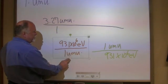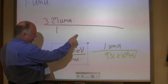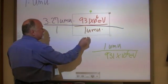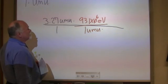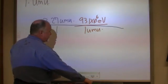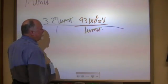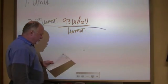Which one of these conversion factors do we use? Well, universal mass units up above, we want the one that has universal mass units below. And so we multiply that. And so now that will convert universal mass units into electron volts. Now I want to convert electron volts into joules.